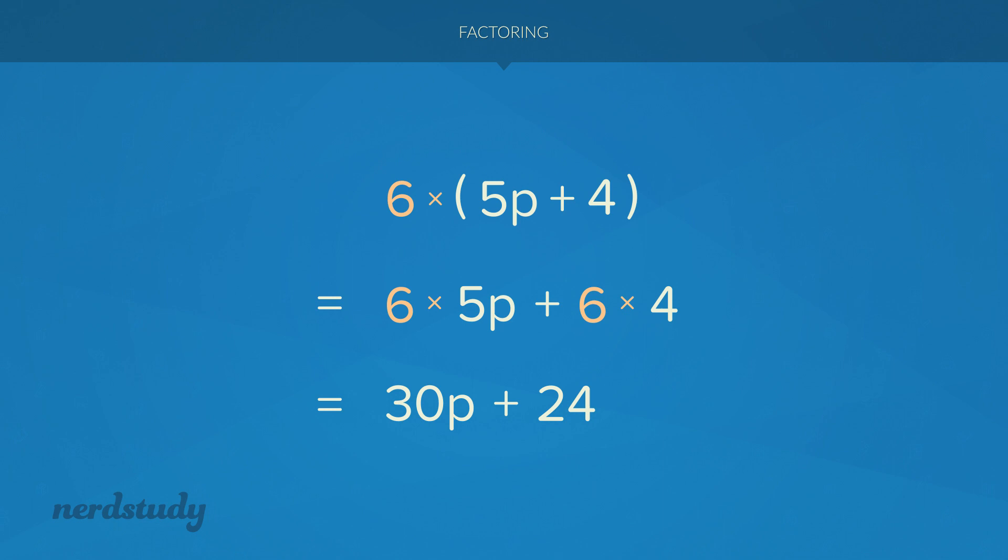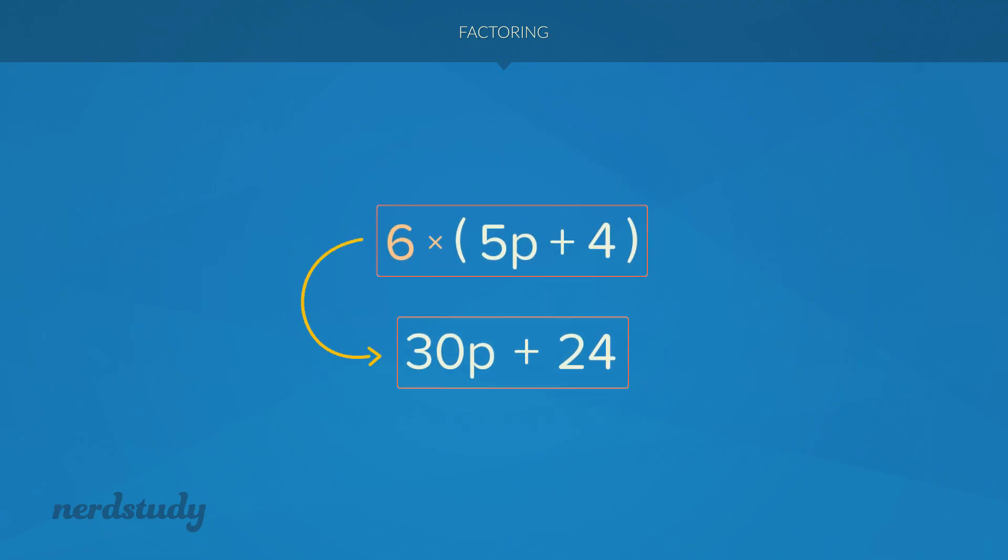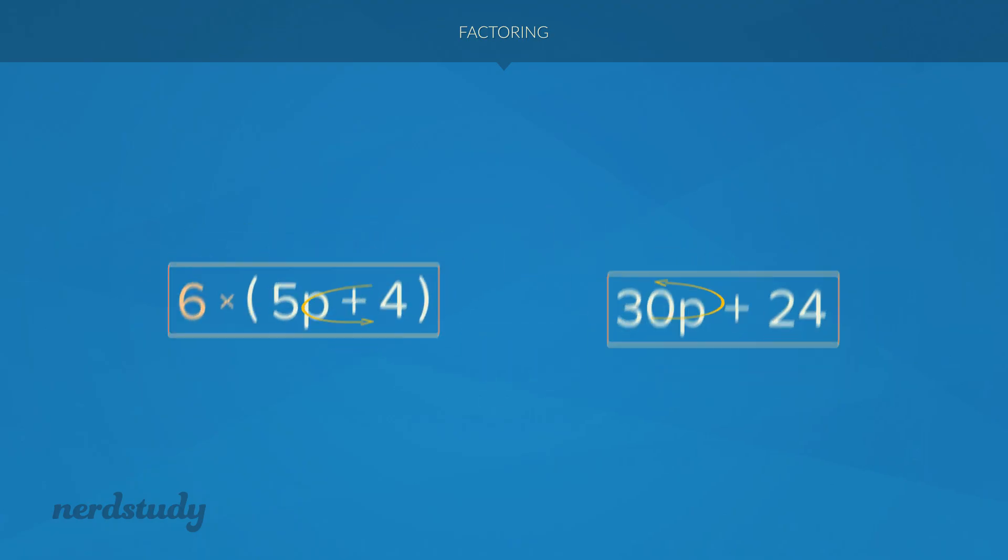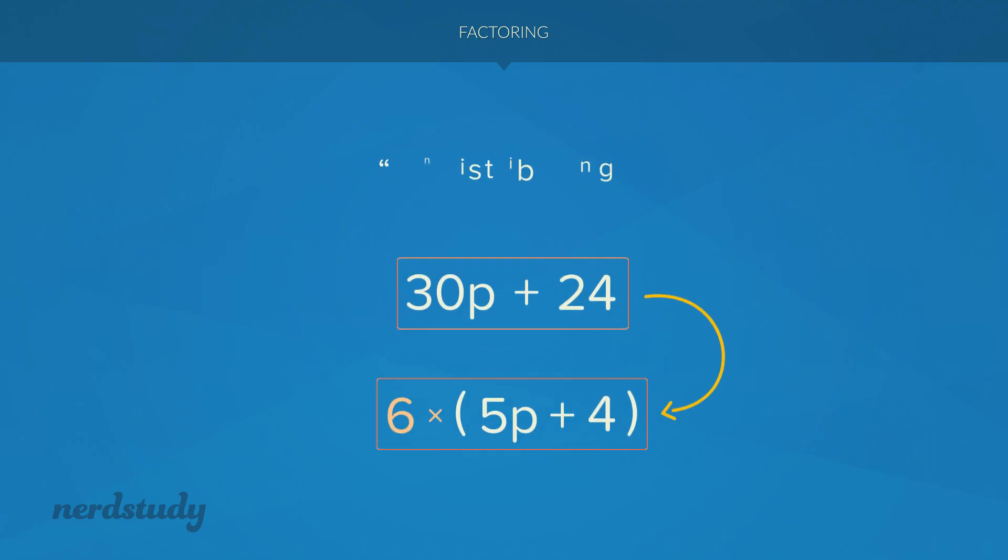So we realize then that through the use of the distributive property, we're able to go from here to here. Keep in mind that these two things are equal to each other. So what that means is that just as how we were able to go from this side all the way down to here, I should also be able to go from here back to there. And of course, if you gave me this algebraic expression and I somehow went all the way back to there, then what I have done is literally I have undone the distributive property that you have used. So this process of undoing the distributive property is known as factoring.